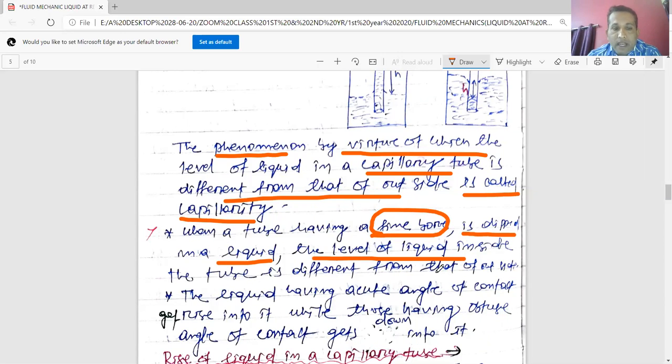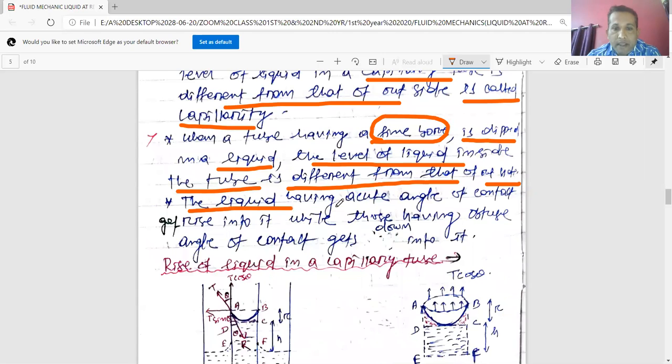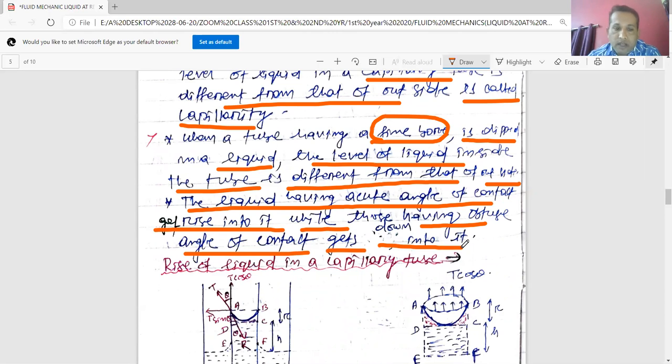As a result, the liquid having acute angle of contact gets raised into it, while those having obtuse angle of contact gets depressed or down into it.